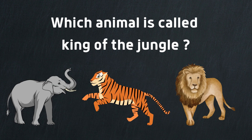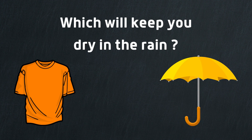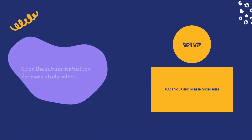Seven. Which animal is called king of the jungle? Yes, it's a lion. Which will keep you dry in the rain? Umbrella.